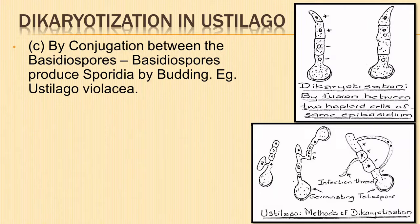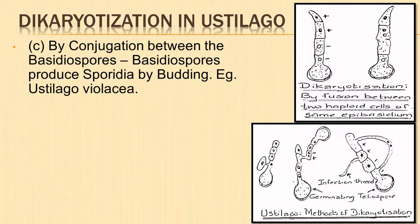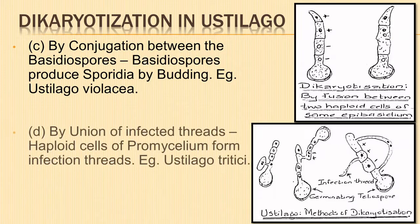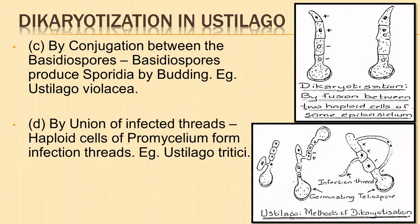Next is dikaryotization by conjugation between the basidiospores. The basidiospores produce secondary spores called sporidia by budding. Sporidia of opposite strains come close together, the common wall dissolves, and the nucleus of one migrates into the other. The binucleate sporidium on germination produces the secondary mycelium. An example is Eustilago violacea. Dikaryotization can also take place by the union of infection threads.